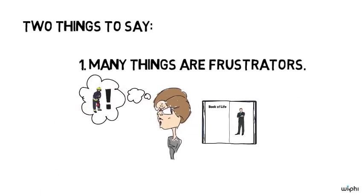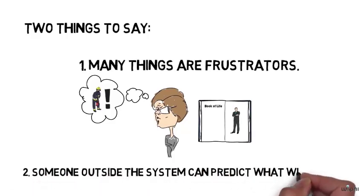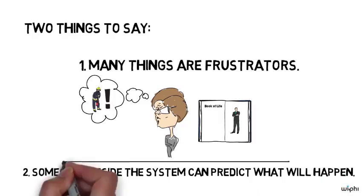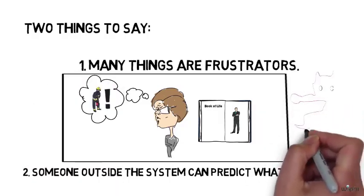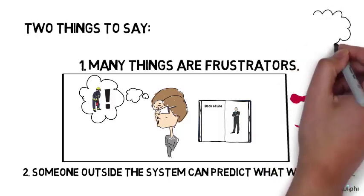Secondly, of course, someone outside the system, if they have all the predictive abilities, they could predict what would happen. But of course, what they'd be predicting is just that you are going to lose the game when you are stuck inside the system.